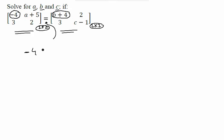Like minus 4 should be equal to b plus 4. This is the first equation. From this, you get the value of b as minus 8.